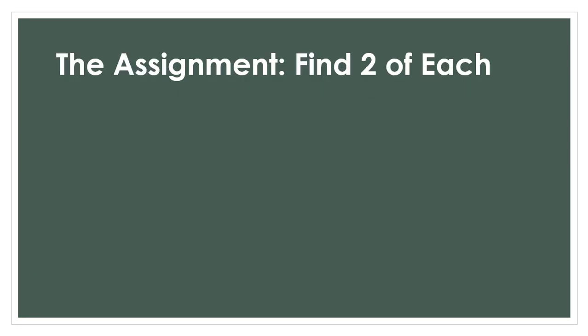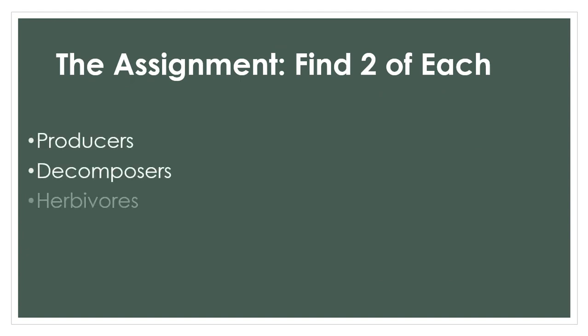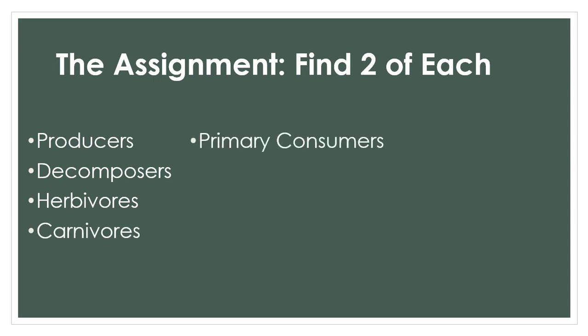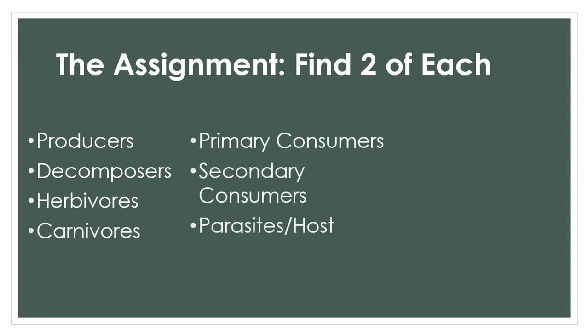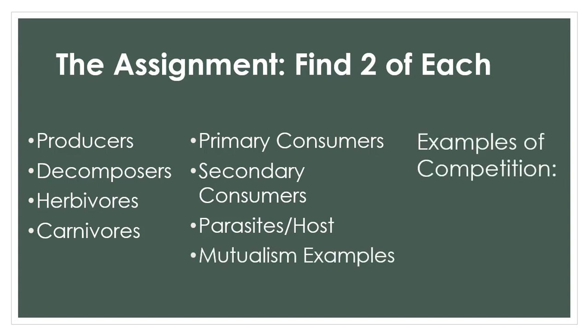Your assignment is the same as last time. You're going to find two of each of the following: producers, decomposers, herbivores, carnivores, primary consumers, secondary consumers, parasites and hosts, examples of mutualism, and examples of competition for both biotic and abiotic resources.